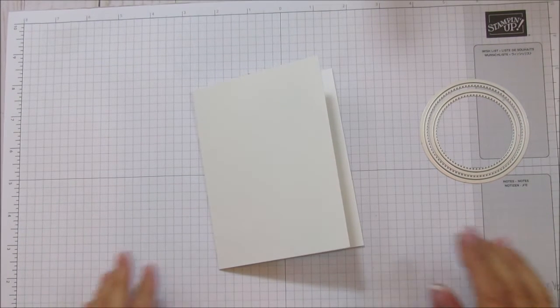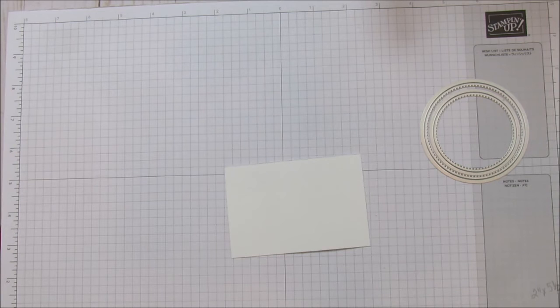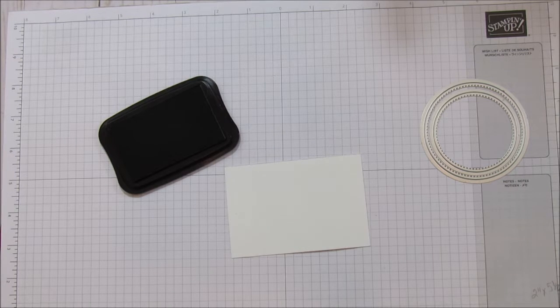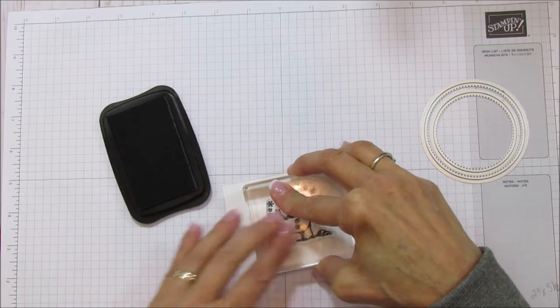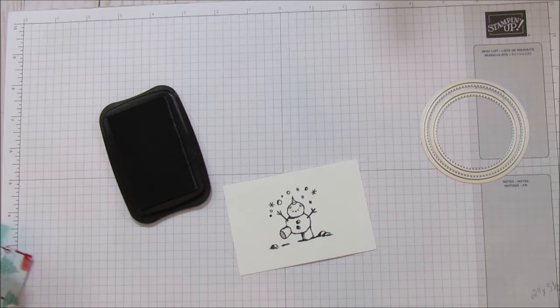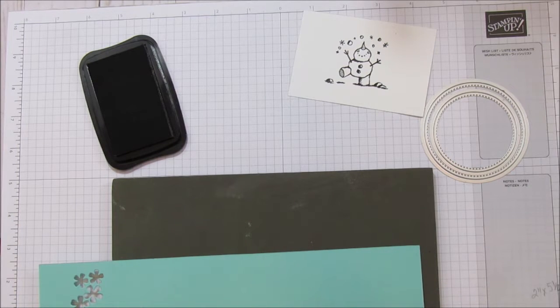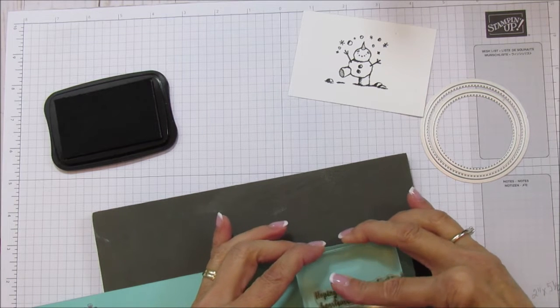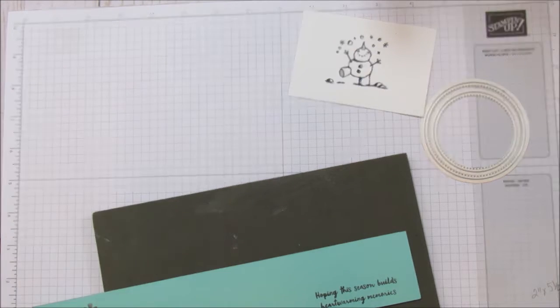So let's go ahead and get started by stamping our snowman, and then we'll stamp our sentiment as well. So we're going to use the Tuxedo Black because we're going to quickly color him with our blends, but we're not going to do any fancy coloring. I'm stamping him in the center because I'm going to be using the die to cut him out. And then the sentiment, hoping this season builds heartwarming memories, we're going to stamp that here. We are going to hand cut these for the sentiment on the front.